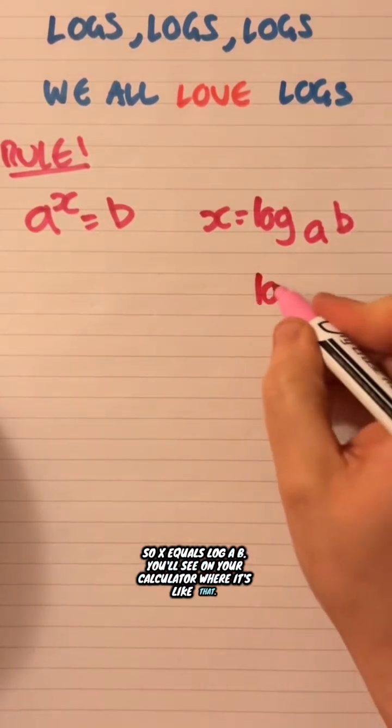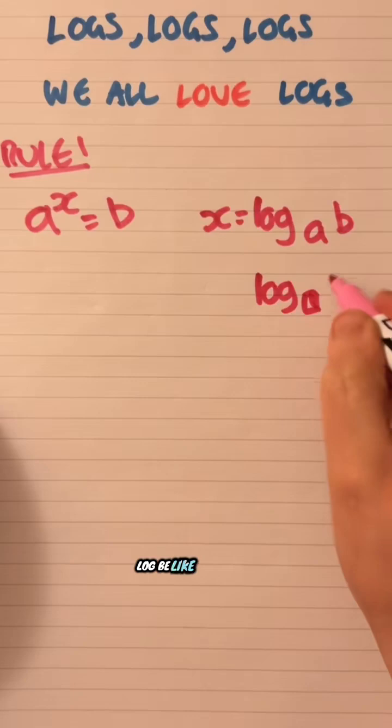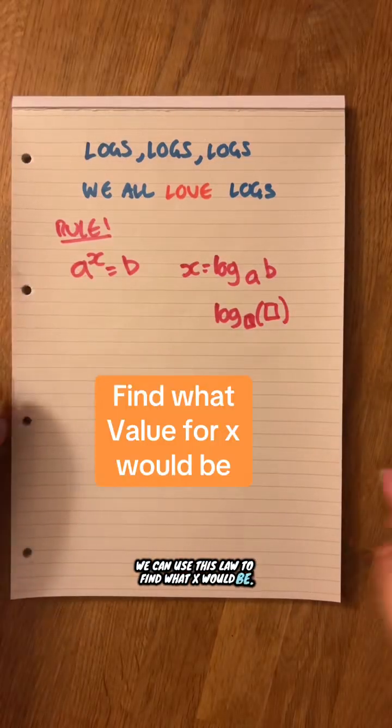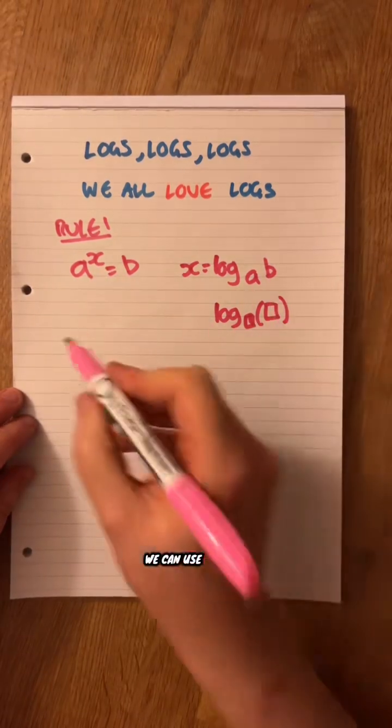You'll see it on your calculator where it's like that. Log be like that. That might be a bracket. We can use this law to find what X would be because something to the power X is B. We can use logs.